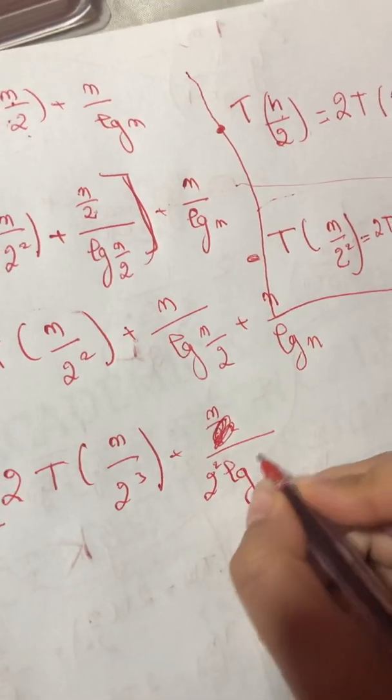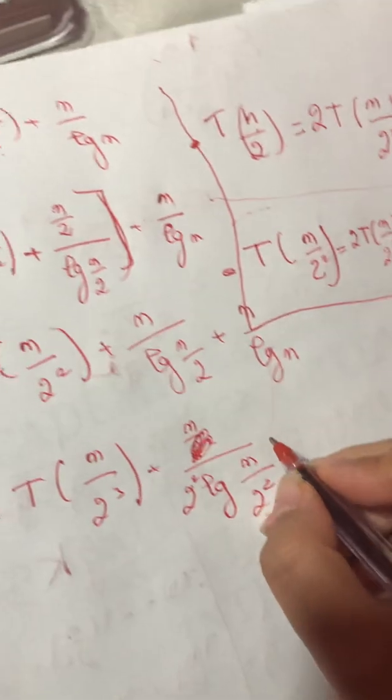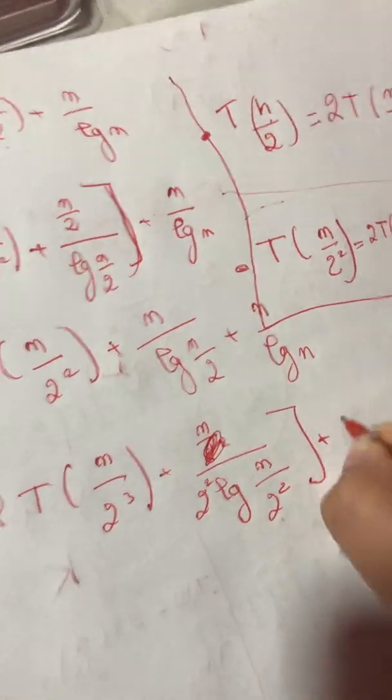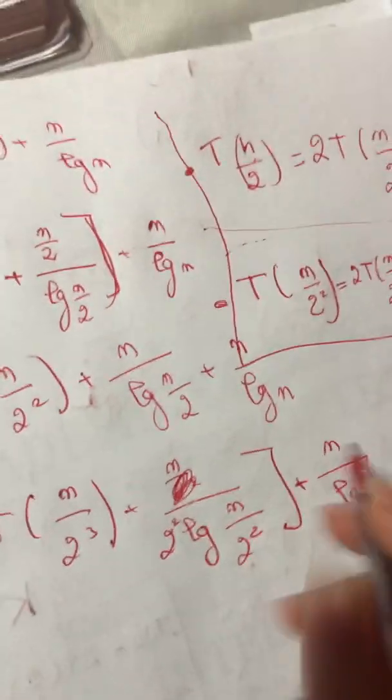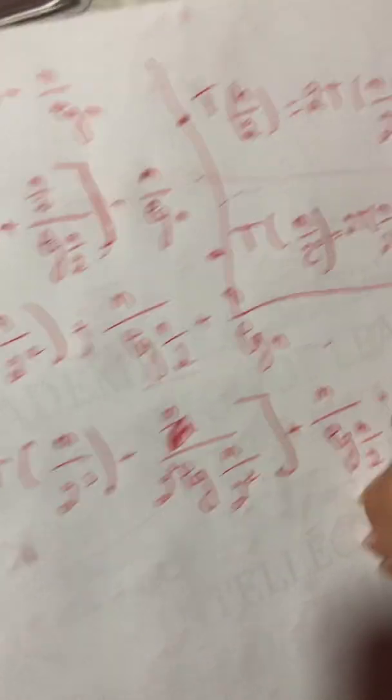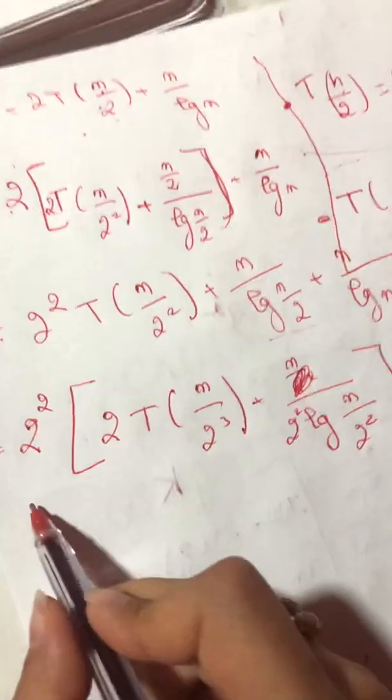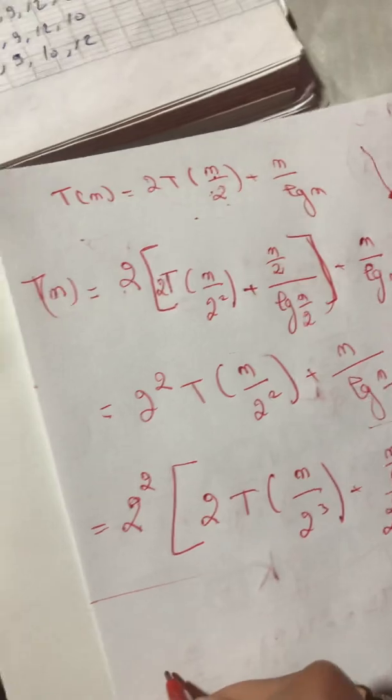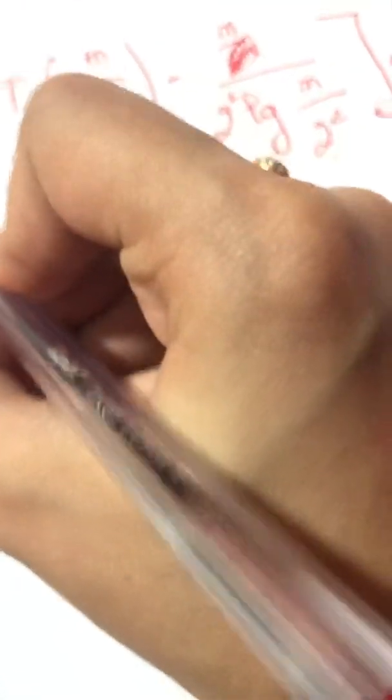So I want to continue the rest of the equation. Plus n log n. Now I want to solve what is inside the bracket. So it's 2 to the power 3.